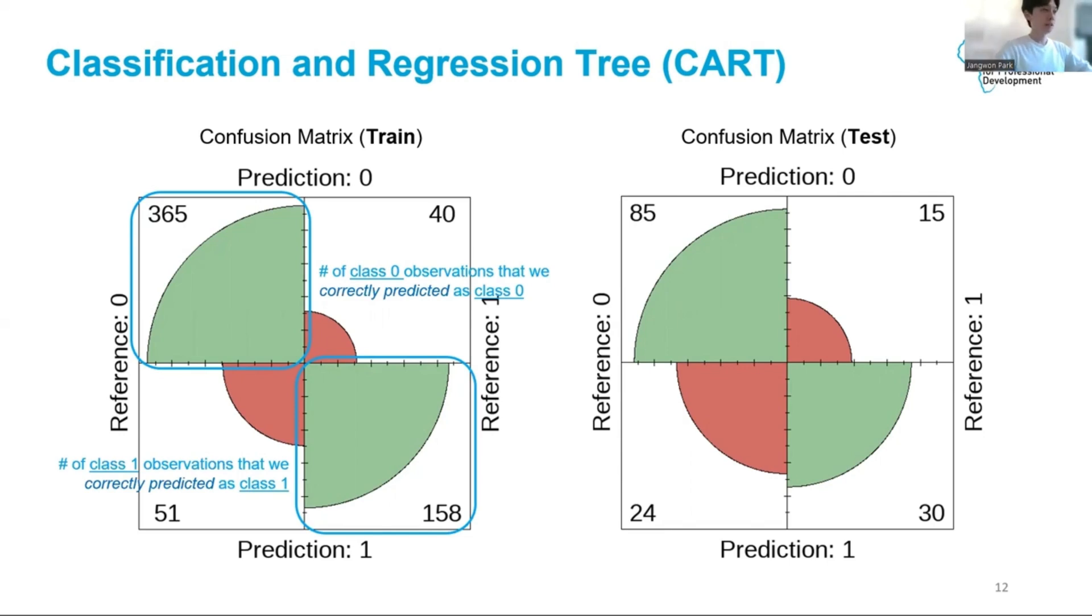Binary accuracy is obtained by summing up these two numbers and dividing it by the total number of data points, which is 768. We can now compare the training and testing performances. The training binary accuracy is 83 percent on the left, while the testing binary accuracy is 75 percent on the right. 83 is not bad at all, but we know that the testing performance is much lower. Sometimes this is unavoidable. We are obviously going to do better on the dataset that we were trained on, but when the gap is too large, this is what we call overfitting.